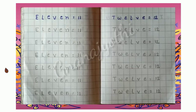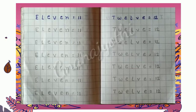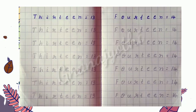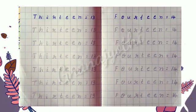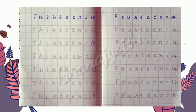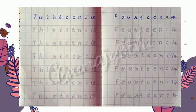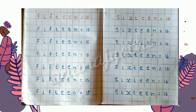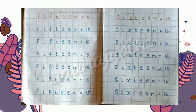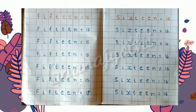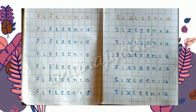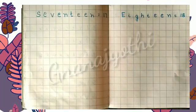Let us revise the spellings: 11 - E L E V E N, 12 - T W E L V E, 13 - T H I R T E E N, 14 - F O U R T E E N, 15 - F I F T E E N, 16 - S I X T E E N.